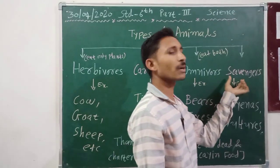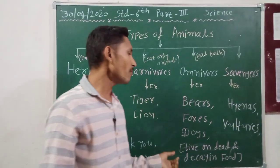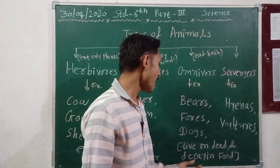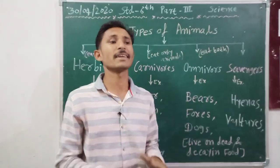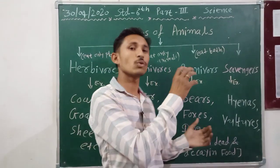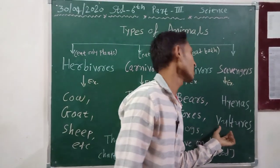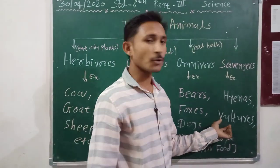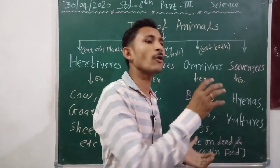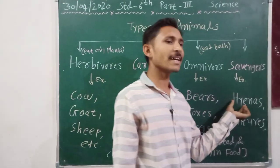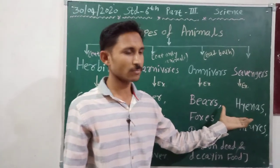Fourth type: scavengers. Scavengers are animals which feed on dead and decaying animals — yaani jo animals mar jate hain, unko khaate hain. For example, hyenas and vultures. Vultures — yaani gheed — jaake mare hue pashu ko khaate hain. Hyenas bhi mare hue animals ko khaate hain.